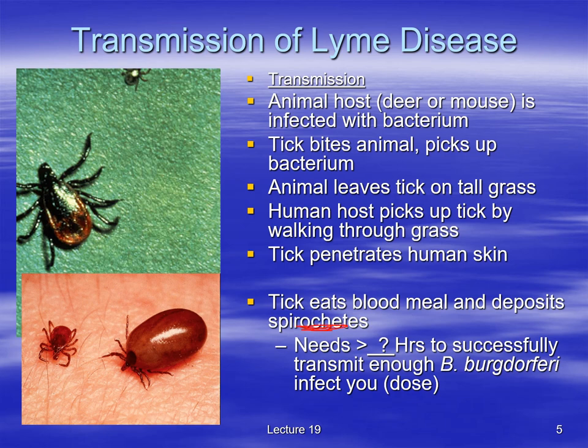You can imagine the tick first landing on you, then after its blood meal it's gotten big and fat with your blood — that's when it's injecting Borrelia burgdorferi into you. How long must it feed to deposit a sufficient dose? The answer is at least 24 hours — some books say 36, but it's more than 24. So it takes a while for the tick to inject enough bacteria to lead to Lyme disease.